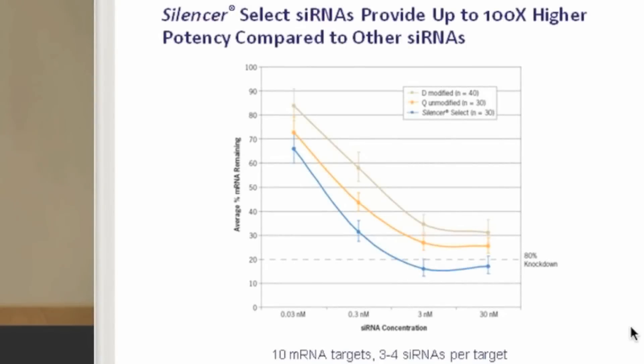The blue curve is Silencer Select, which is very potent, and these are two products from competitors that are lagging behind. They do not allow achieving a similar extent of knockdown.